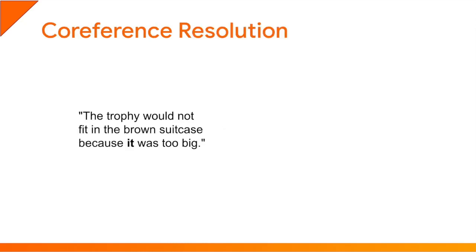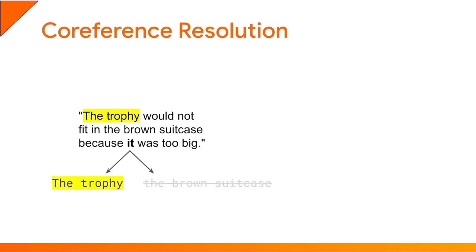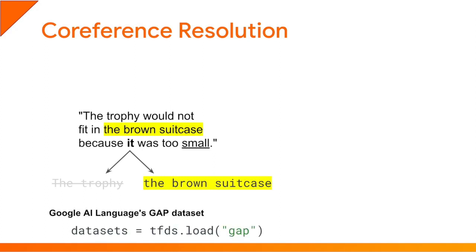Coreference resolution is another NLP task, where the model must find text segments that refer to the same thing. A famous example is the sentence: 'The trophy would not fit in the brown suitcase because it was too big.' What does the word 'it' refer to — the trophy or the brown suitcase? For us humans, it's obvious that 'it' refers to the trophy. But if we replace 'big' with 'small,' then 'it' refers to the brown suitcase. This illustrates how NLP can be difficult, since it involves not only syntax, grammar, and language structure, but also significant knowledge about the world — basically common sense. If you're interested in coreference resolution, you can check out Google's GAP dataset.